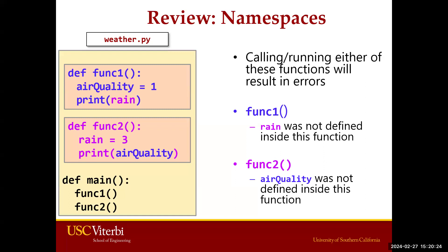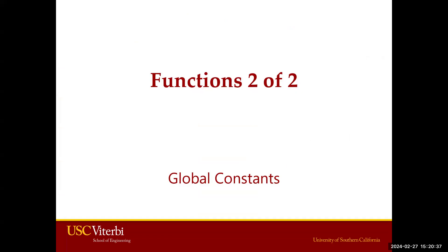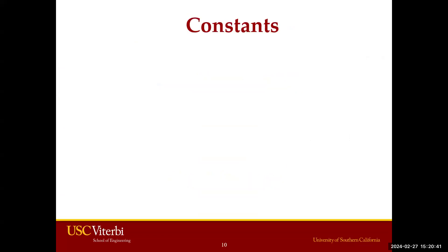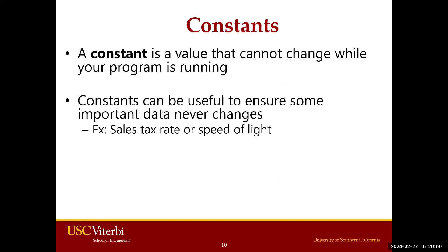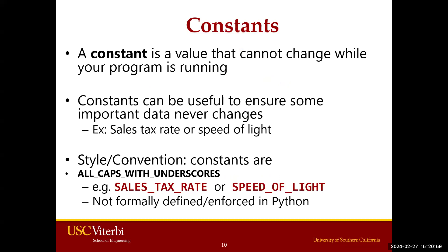Even if you run function 1 first and create the air_quality variable holding integer 1, when you leave function 1, air_quality is forgotten. Let's see if the global constant idea can help with this issue. A constant is a value that cannot change while your program is running. Constants can be useful to ensure some important data never changes — for example, a sales tax rate or the speed of light. The style convention for constants is all caps with underscores between words. This is not formally enforced in Python, but it is a styling convention.